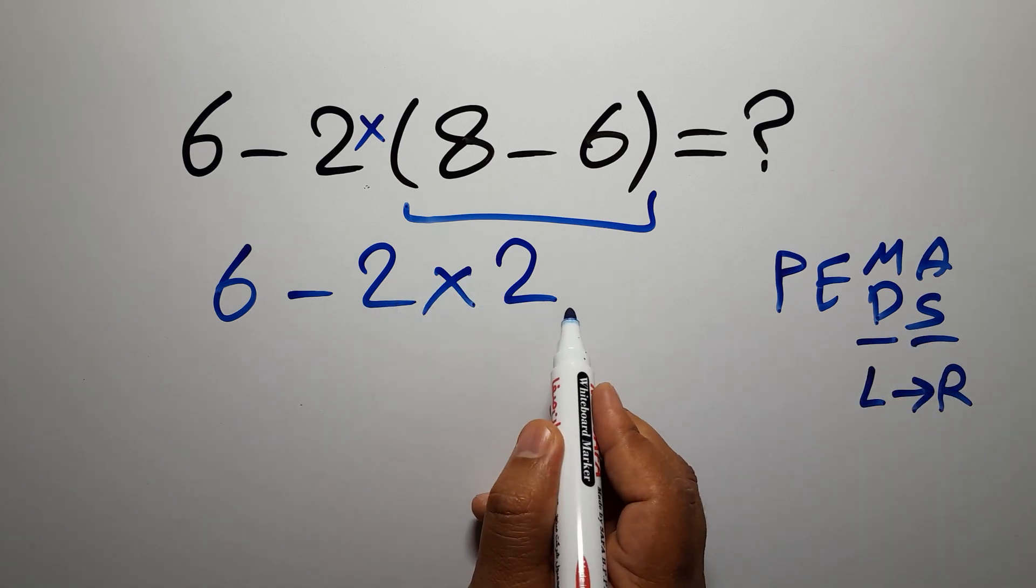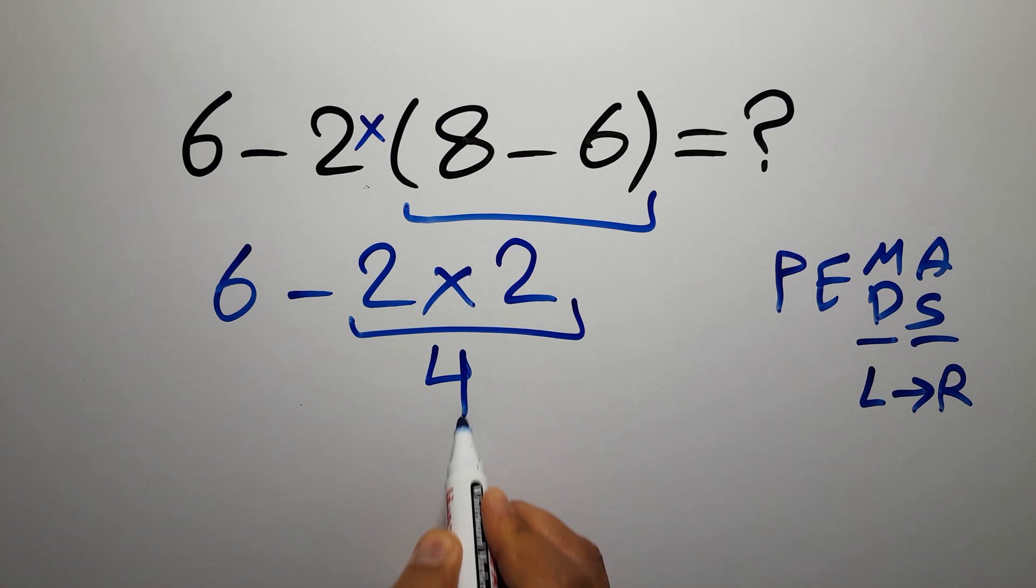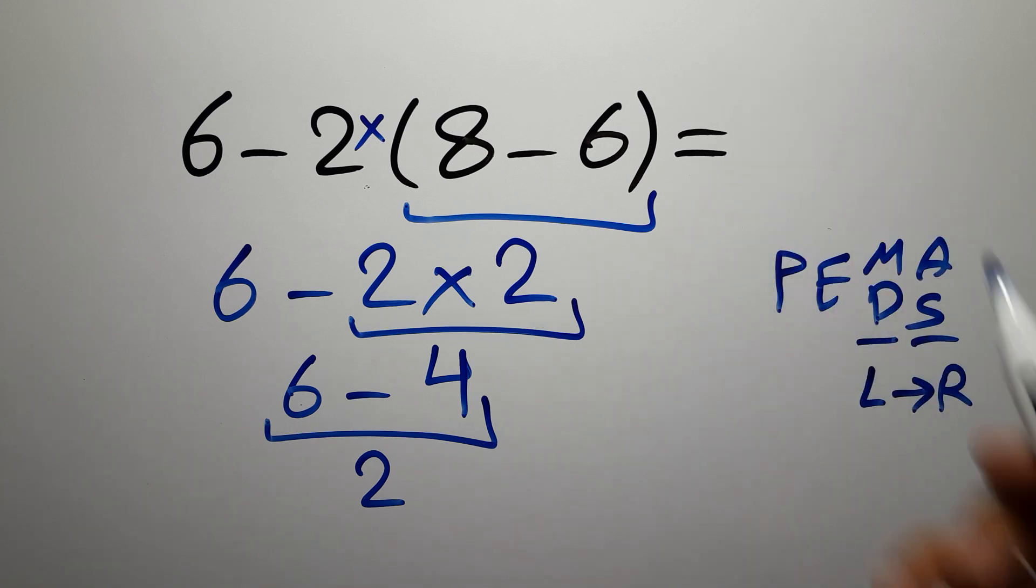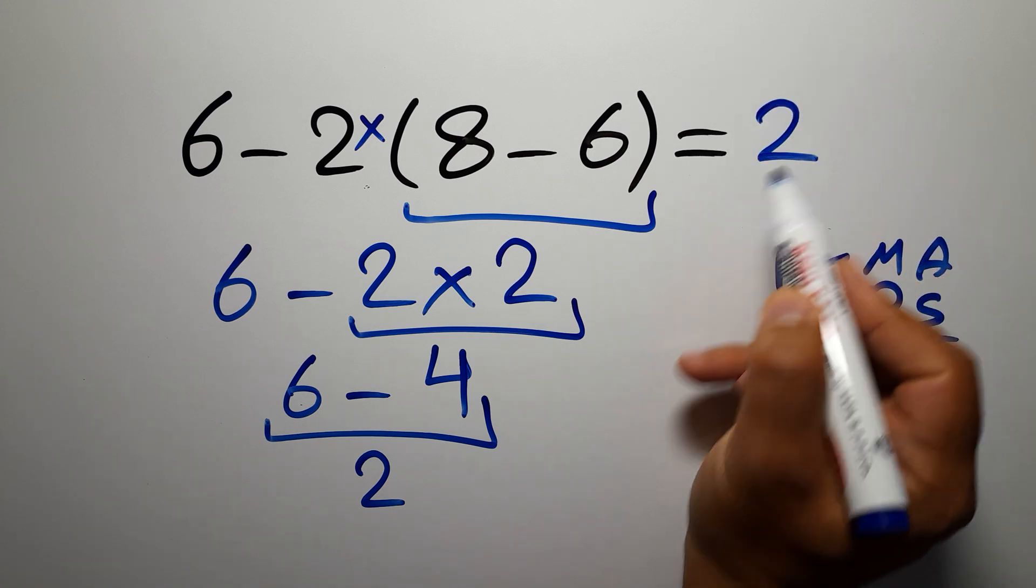2 times 2 gives us 4, so we have 6 minus 4 which equals 2. And this is our final answer to this problem. The correct answer is 2.